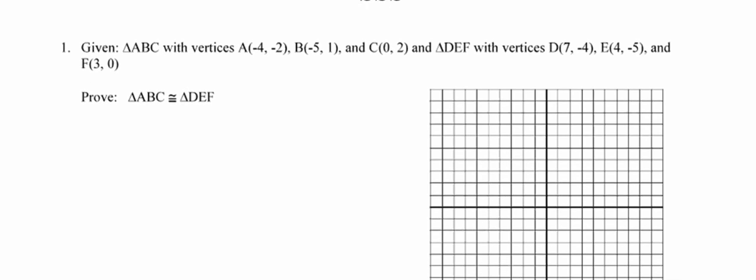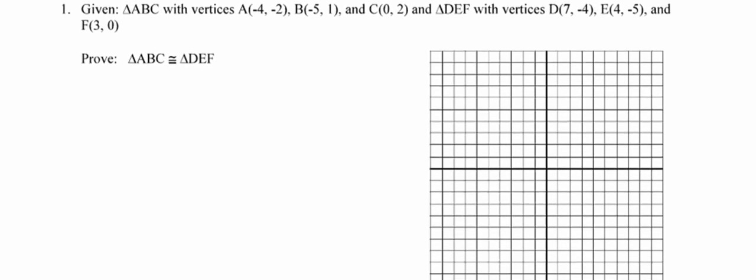We are given triangle ABC with the given vertices and triangle DEF with the given vertices, and we're being asked to prove that these two triangles are congruent to each other. So the first thing I'm going to do is plot the given triangles on the coordinate axes, just so that I can get a really good visual feel for exactly what these triangles look like.